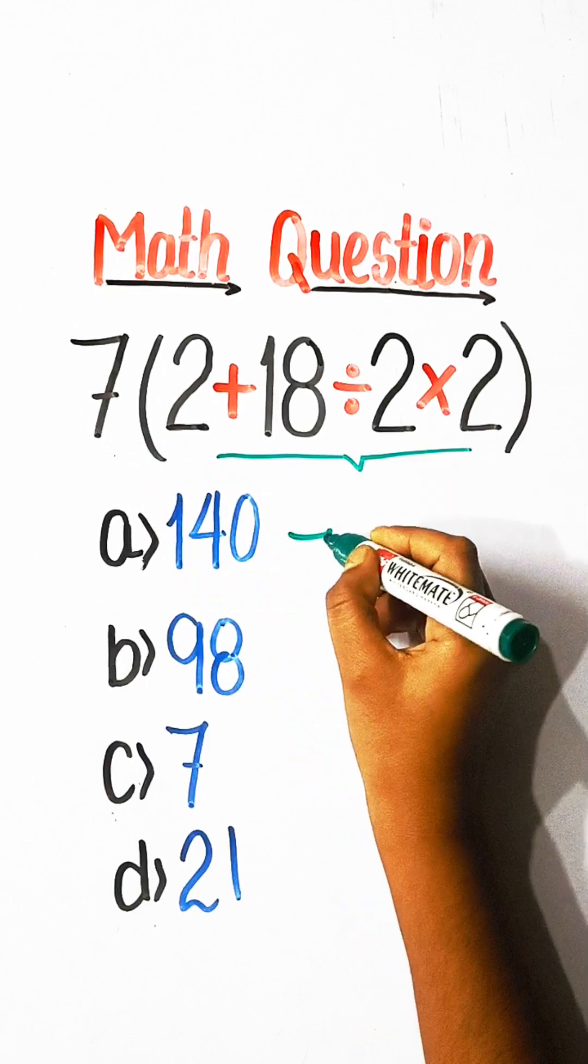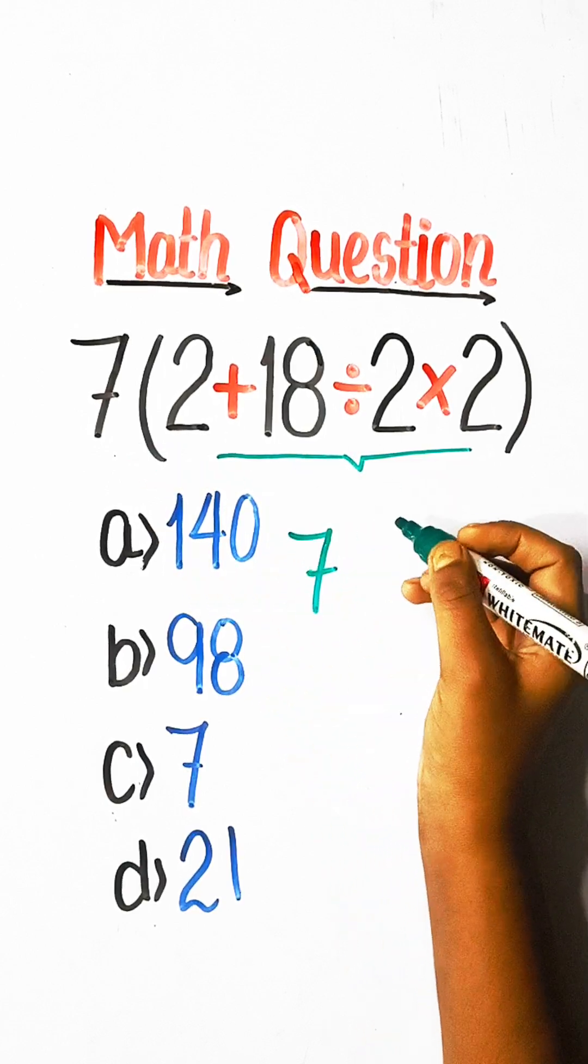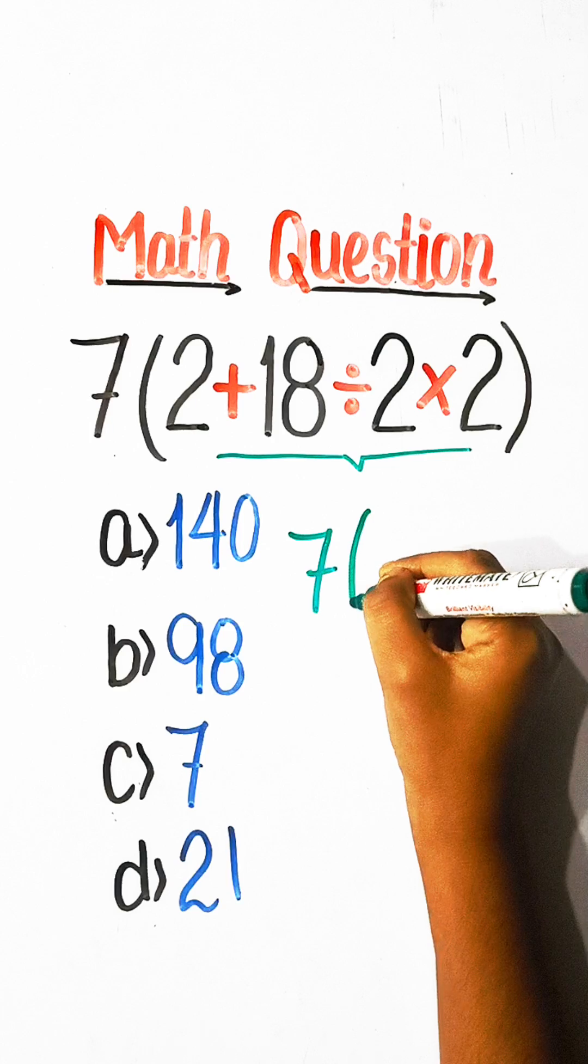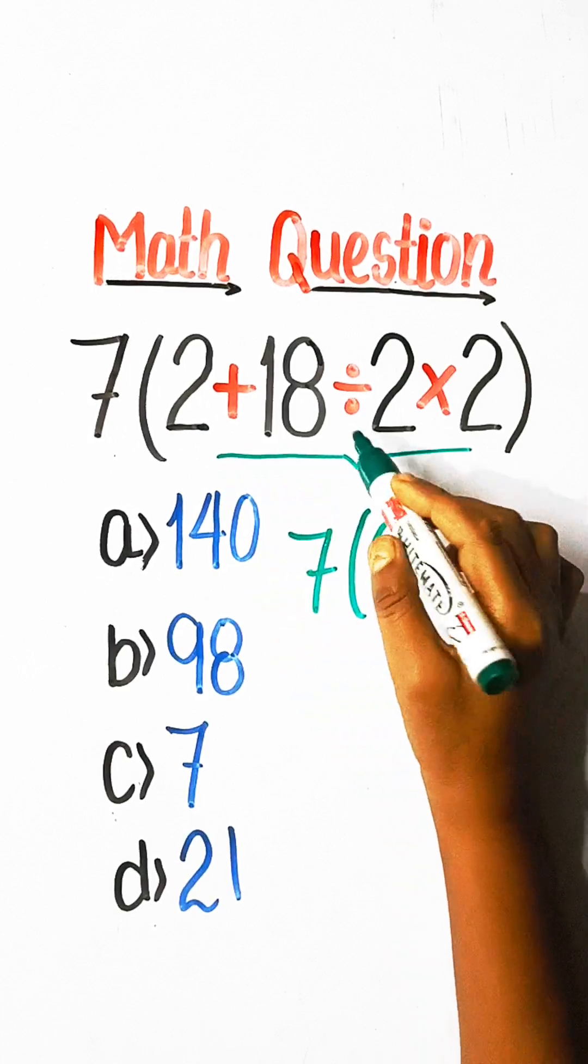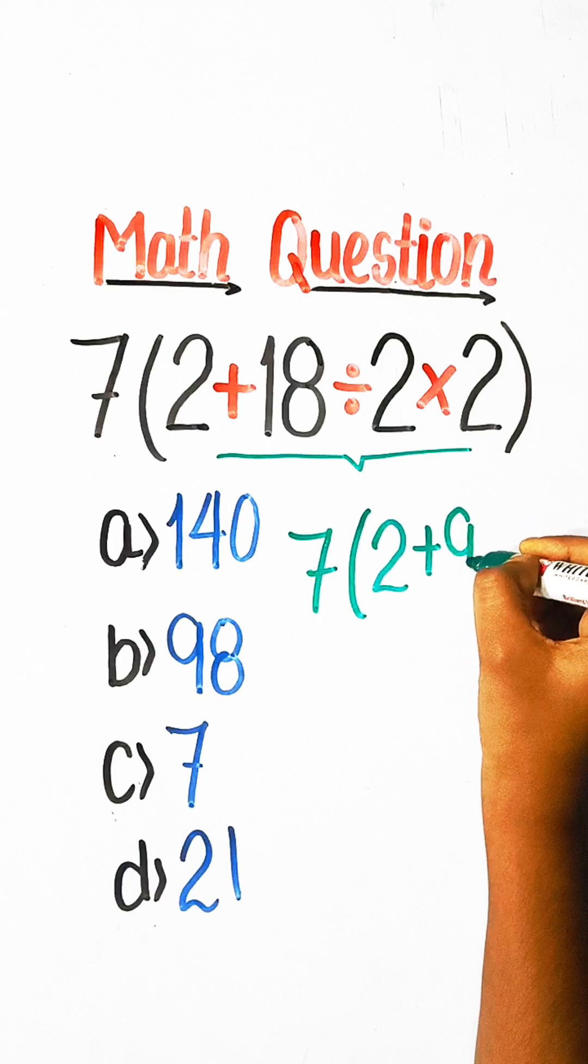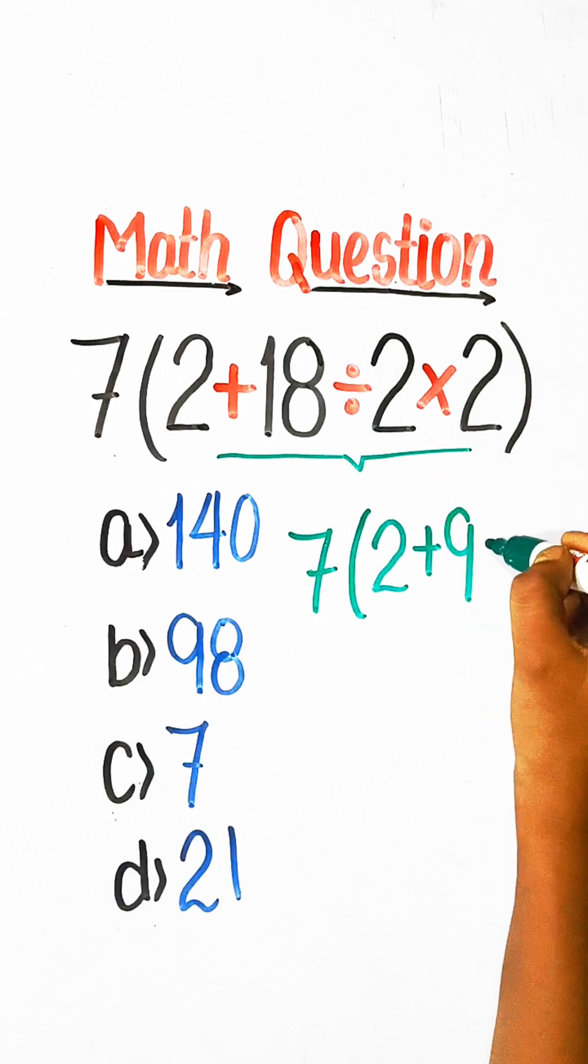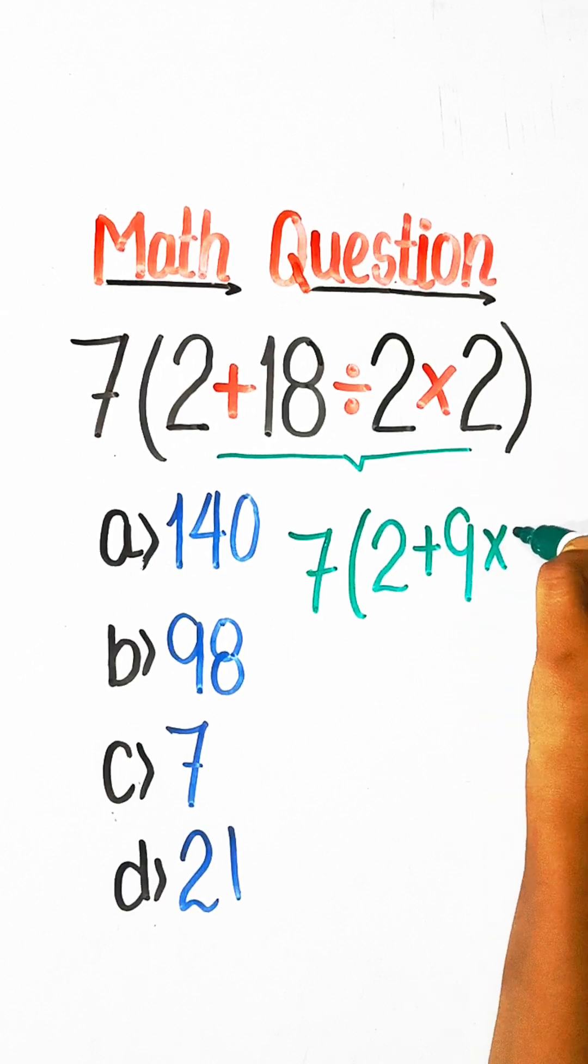We can write here 7(2+18÷2 is 9, multiply by 2).